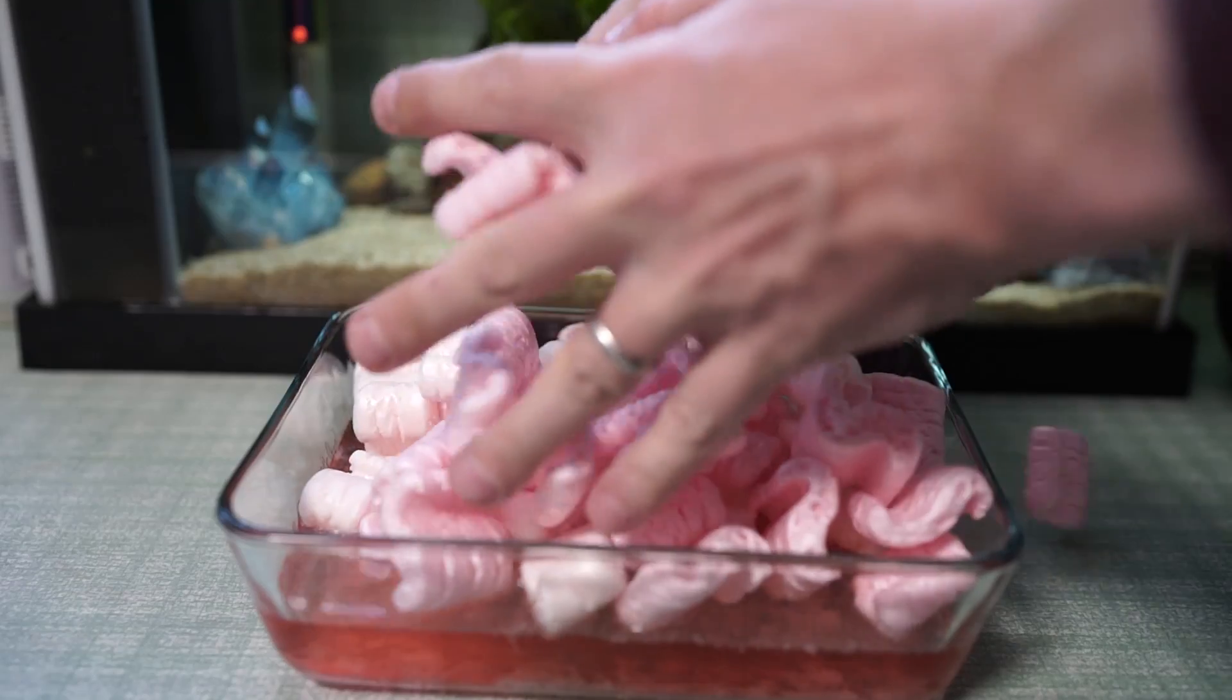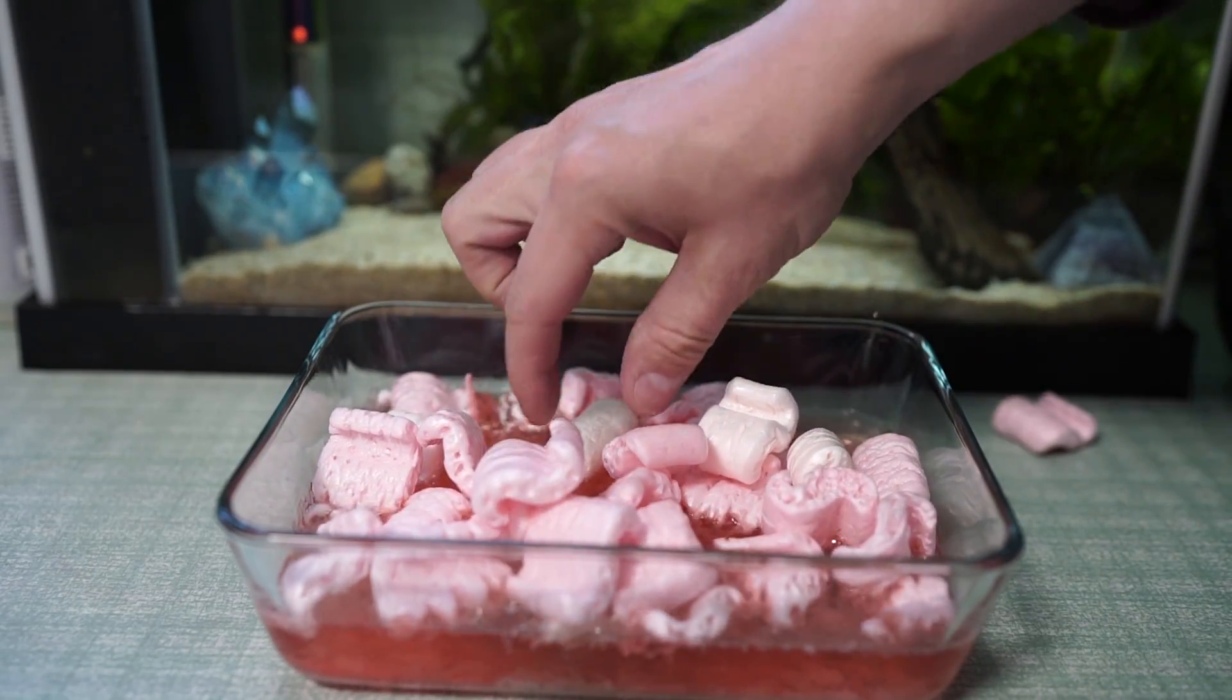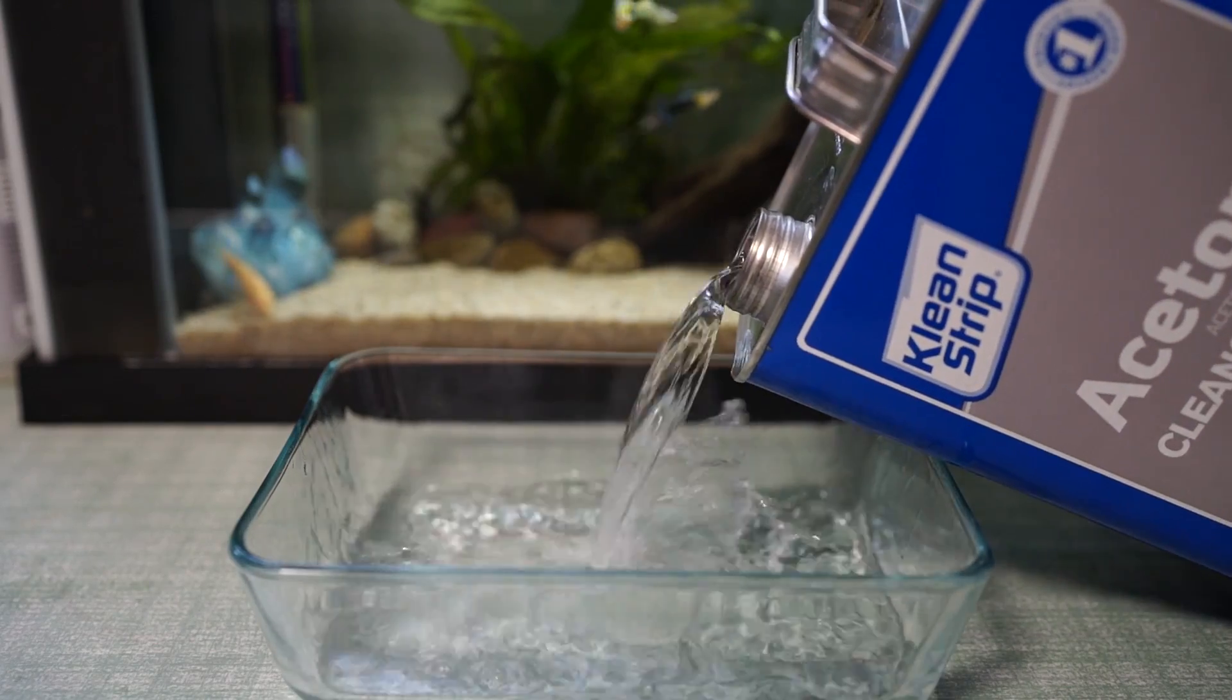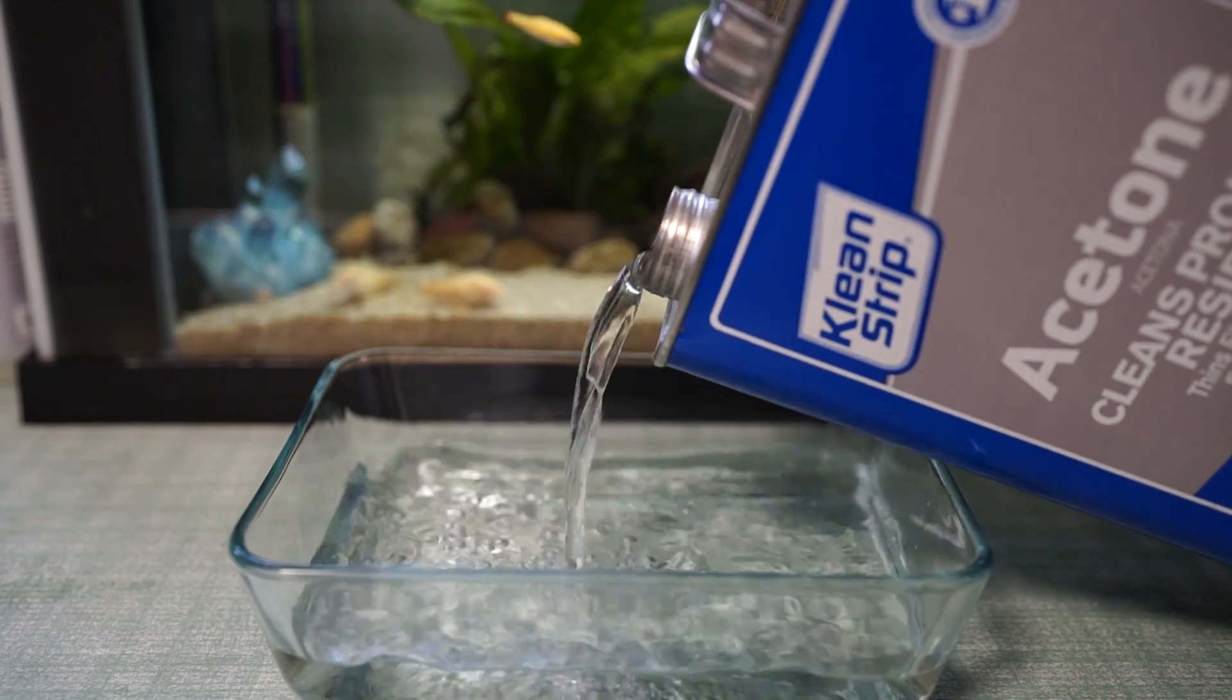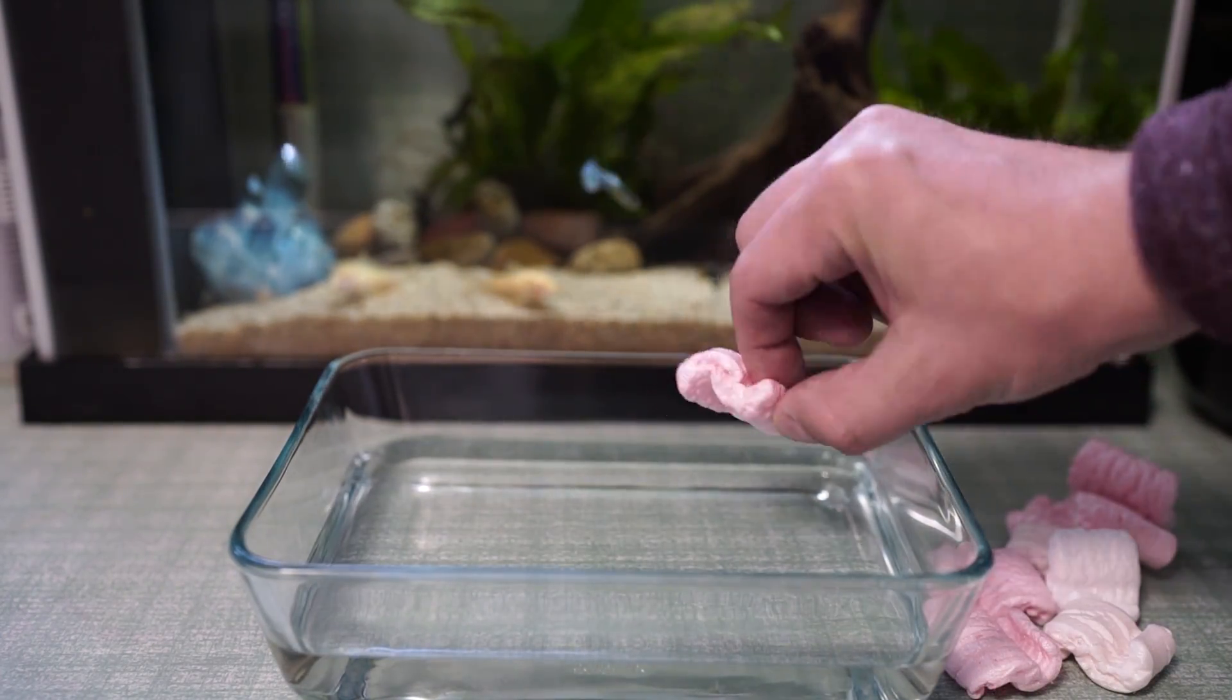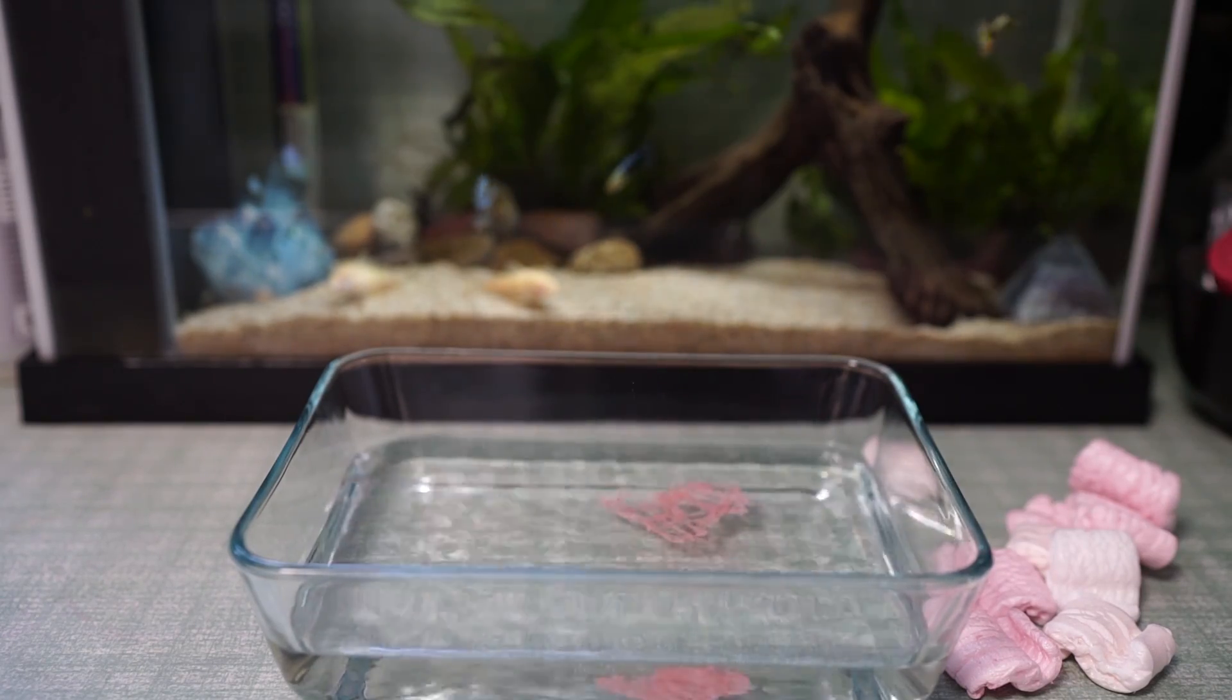This of course includes styrofoam, which happens to be my favorite, so let's start there. I put about half an inch of acetone into a glass container. This will be enough to take care of some tests that I want to do with styrofoam. Now the quickest and most intense reaction you'll find is with packing peanuts.